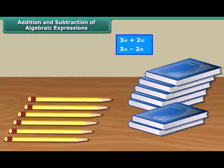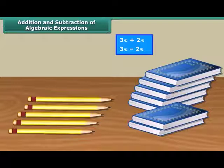However, if we remove one pencil from six pencils, then we are left with five pencils, but still we have the seven books. So, you can see it's quite similar with algebra. We can only add or subtract similar objects.